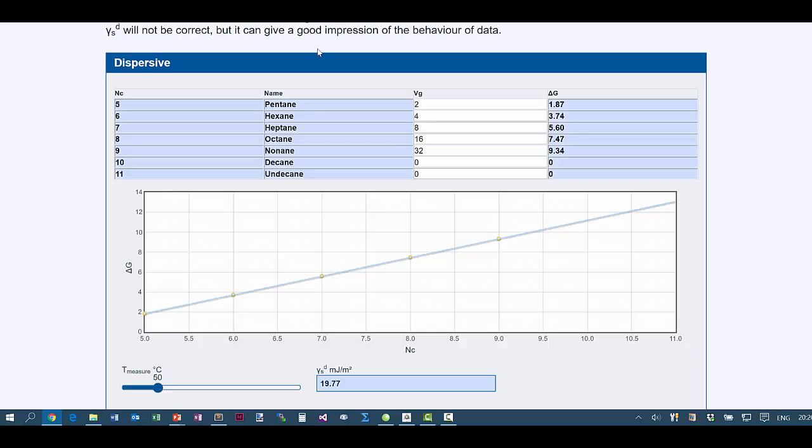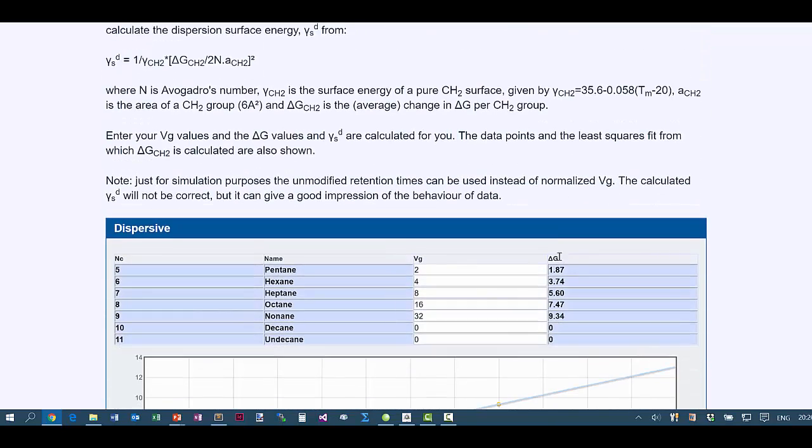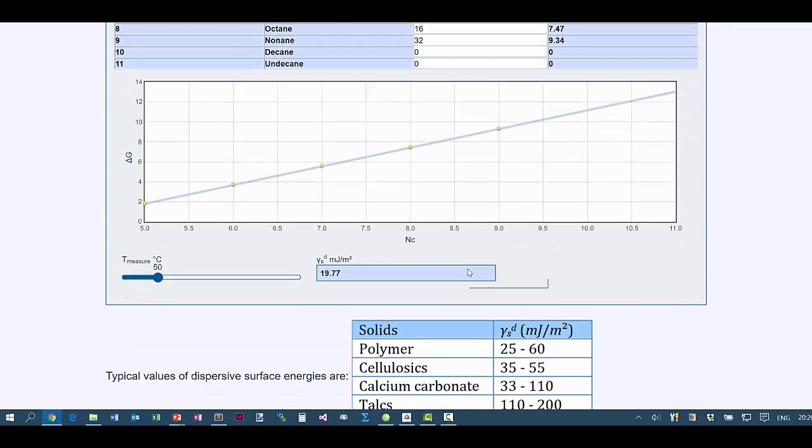We discussed in the first video measuring dispersive energy. You have the peaks from pentane, hexane, heptane, and octane, and from the slope of delta G versus carbon number you can calculate the dispersive free energy.